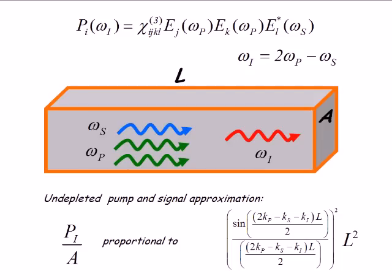The power coming out at the idler frequency, normalized to the cross-sectional area, is proportional to L², because all these pieces add up and then I square them to find the power.